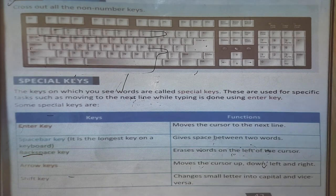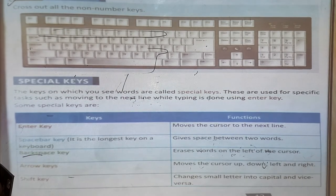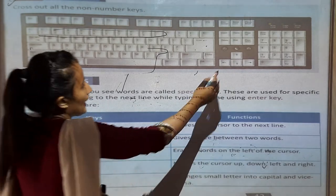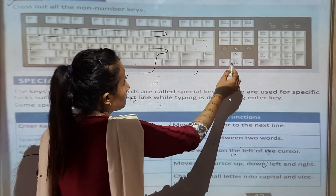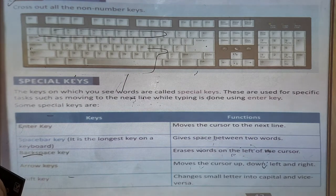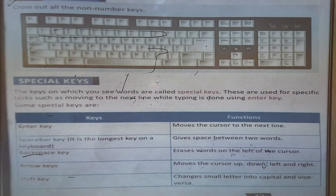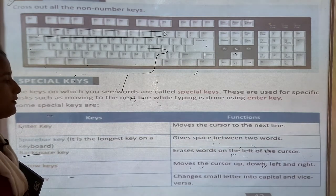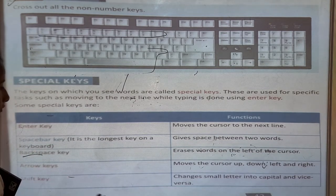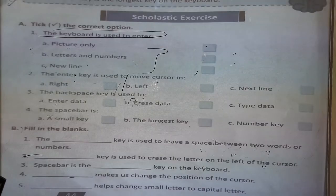Arrow keys: they move the cursor up and down, left and right. So with arrow keys you can scroll up and down. Shift key: the shift key helps you change a small letter into a capital letter. When you want to write in capital letters, you can click the shift key.